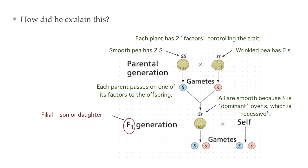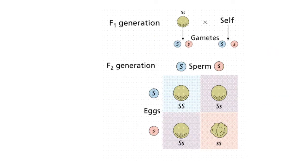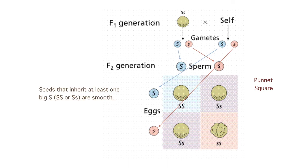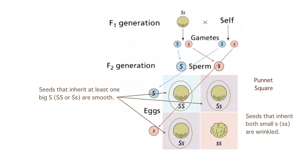In the next generation, he self-fertilized those F1 offspring that were smooth but had one of each factor — a big S and a little s. That produced the F2 generation, the grandchildren generation. Each parent could give only one of its factors to its babies, and the gametes — the eggs and pollen — would come together. You can show how they combine in something called a Punnett square. Seeds that inherit at least one big S are going to be smooth, and seeds that inherit both small s's are going to be wrinkled. Out of four offspring, three would have smooth seeds and one would have wrinkled seeds — a 3 to 1 ratio.